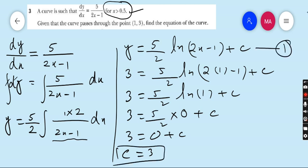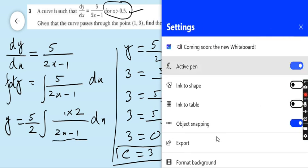Put this value of c in equation number 1. Y is equal to 5 upon 2 ln 2x minus 1 plus c. C is 3. So hope you understand completely question number 3, very easy and very important according to examination point of view.